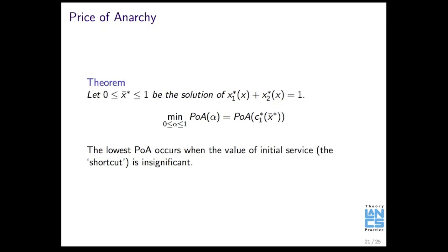And so I was able to show this, and so when the value of initial service, when the value of the shortcut is insignificant, that's when the lowest price of anarchy occurs. So that gives you basically the upper boundary at which you should value this shortcut.